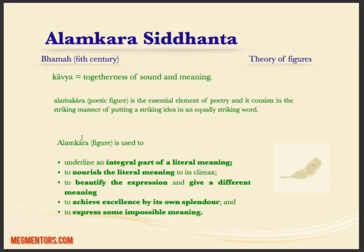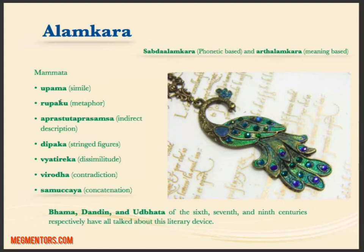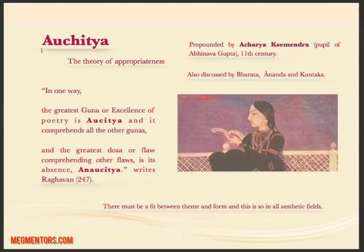We use Alankar to underline an important part of meaning, to nourish the literal meaning to its climax, to give more beauty to expression, to attribute meaning, to evoke splendor, and to express something we cannot in ordinary words. Forms of Alankar by Mammata include simile, metaphors, contradictions, Virodha, and Deepak. Bhama, Dandan, and Udbhat have also talked extensively about this literary device.